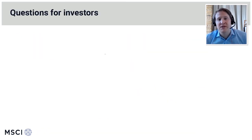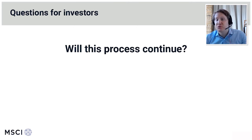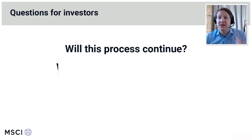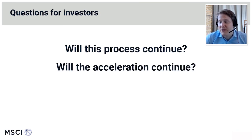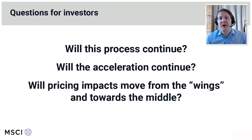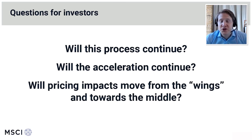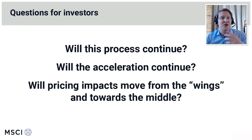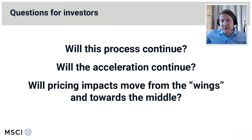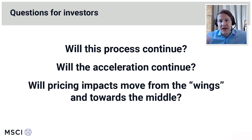What does that mean for investors? First, will this process continue — will pricing impacts of transition risk keep accelerating in those categories? One very interesting open question is whether we will see pricing impacts move from the tails or wings of the distribution into the middle. A common narrative is that transition risk will impact all companies as the economy moves to low carbon. But what we're seeing now in equity markets is that the impact falls on the very brown, very carbon-intensive companies, and the very green climate champions — not so much in the middle. Whether this pricing impact will move into the middle and start affecting potentially all companies in equity markets remains to be seen.